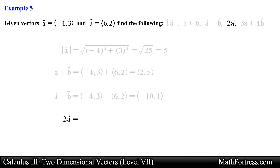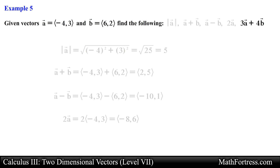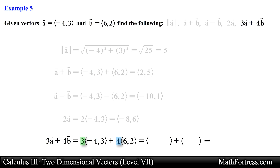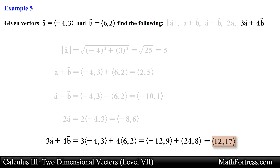Now let's find 2 times vector A. To calculate scalar multiplication 2 times vector A, we simply take the scalar 2 and distribute it to both the x and y components of vector A, resulting in a final vector with components equal to (negative 8, 6). Finally let's find the sum of 3 times vector A and 4 times vector B. Following the order of operations, we first carry out scalar multiplication for vector A and B, distributing the scalar to each of the vector's components. Then we add the resulting vectors component wise. This vector operation yields a vector with components equal to (12, 17) for the x and y components respectively.